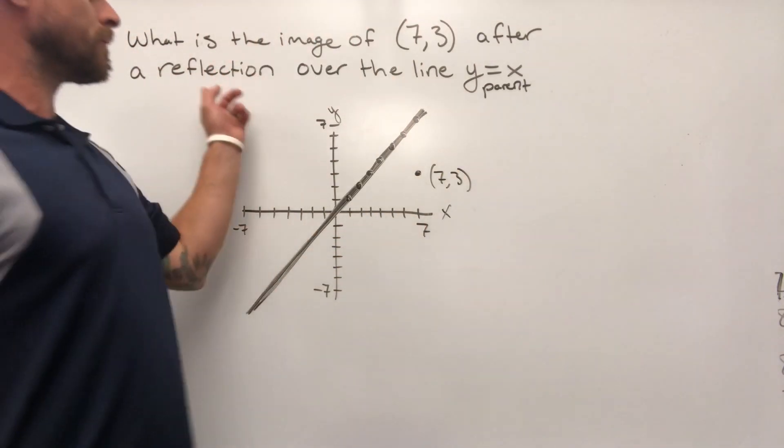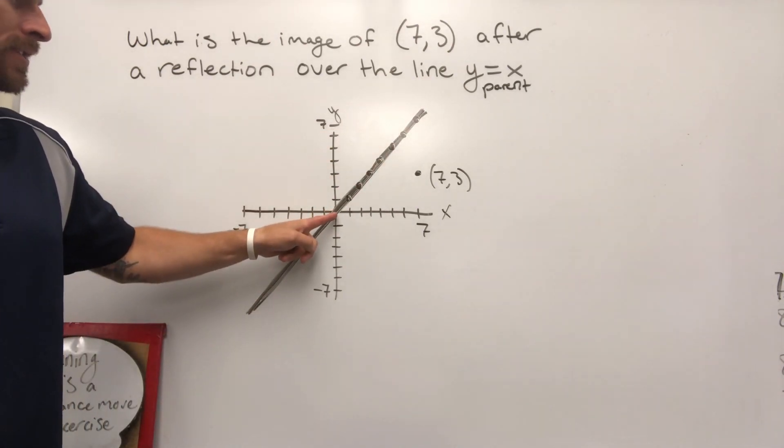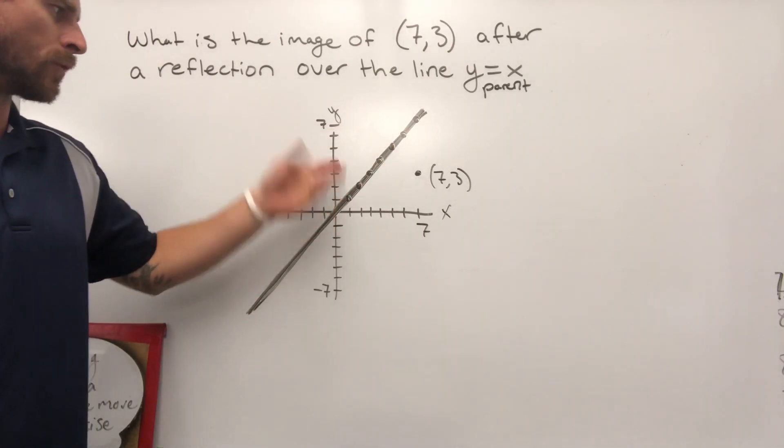And they're asking us to reflect it over y equals x, which is now drawn right here. That's the line starting at 0, going up 1 over 1, up 1 over 1, etc.